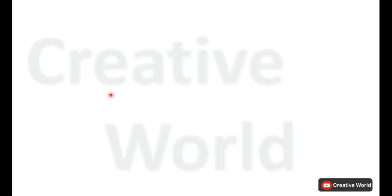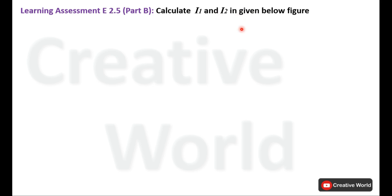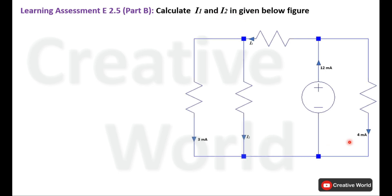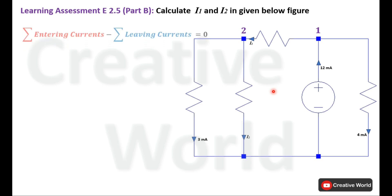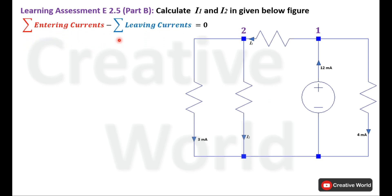Moving to part B: calculate I1 and I2 in the given figure. There are three nodes in this circuit. One node is taken as the reference or ground node, while the other two — labeled node 1 and node 2 — will be used to calculate the values of currents I1 and I2.